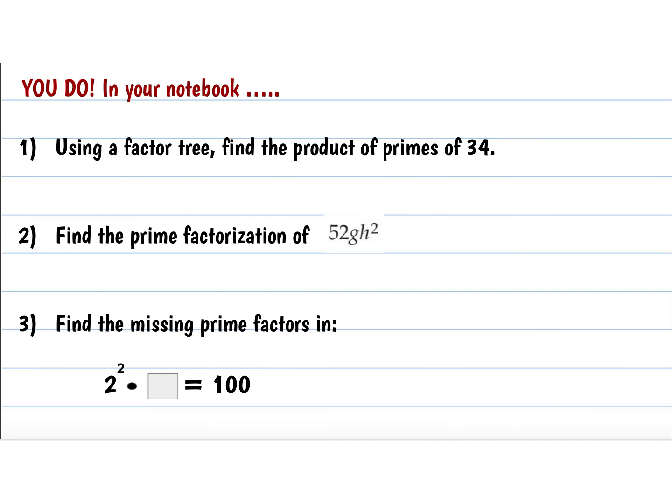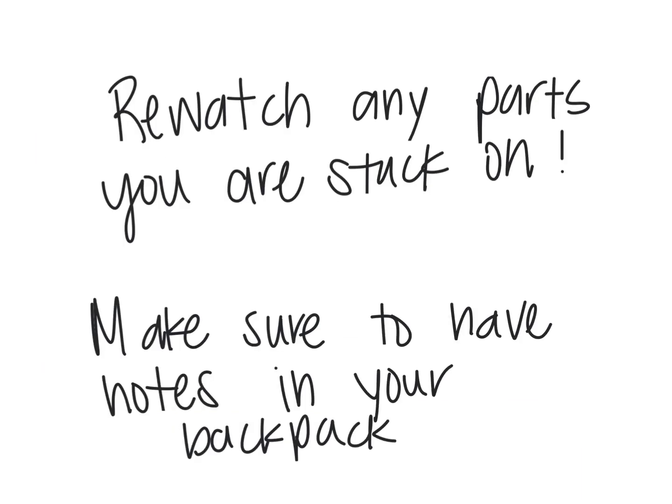Okay, I'm not going to go through these ones, but I want you to try them in your notebook — I'm going to look to see if they are done tomorrow. So pause and try these three problems: prime factorization of 34, prime factorization of 52gh², and then find the missing prime number that would fit for 2 squared times something equals 100. That's all for prime factorization. Make sure to go back and re-watch any parts that you are stuck on, and make sure that your notes are in your backpack and at school, ready to go tomorrow.